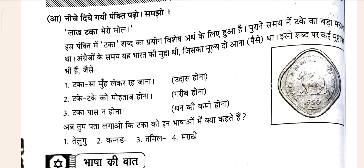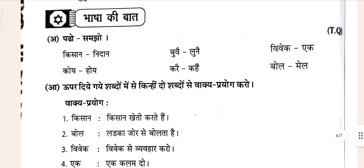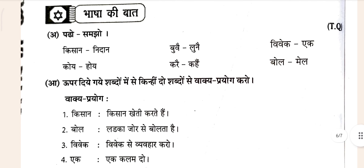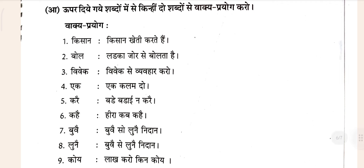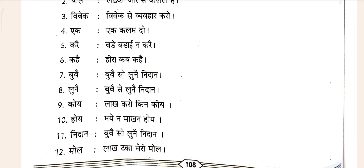When you come to the Bhasa ki bat section, you can see: Amon kishaan nindan, koe koe means hoi, na kare matlo kahe bibek means ek bol means mail. Something is given there. I hope you don't have any concept of doubt. Whenever you get confused, just match with your textbook.